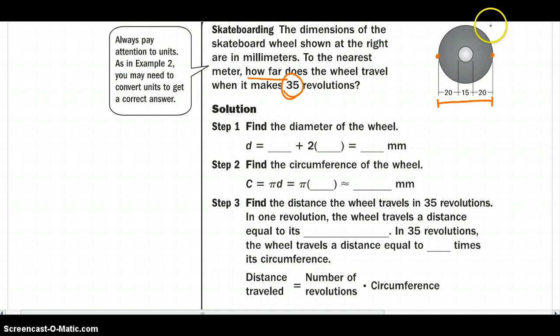So they've given us those dimensions. So we'll say 15 plus 2 times 20 because we have two 20 millimeters there. So our diameter would be 55 millimeters. Using that information, we can find the circumference. And since we have the diameter, we can use the pi times the diameter. So we'll say pi times 55, which gives us the most exact, but approximately 172.8 millimeters.